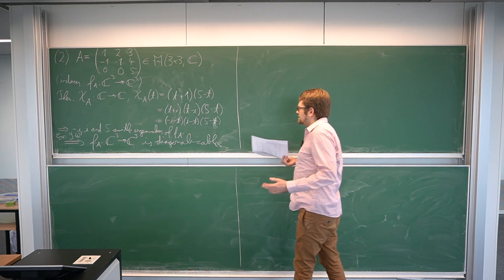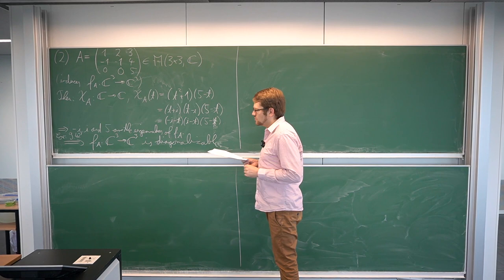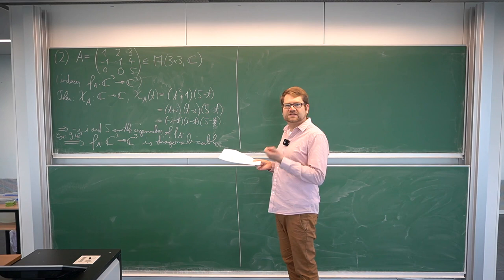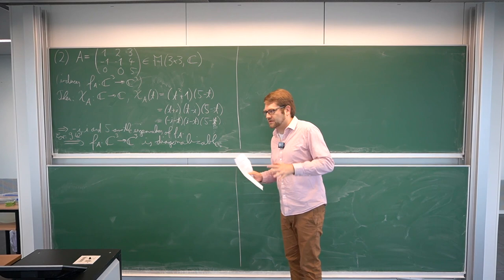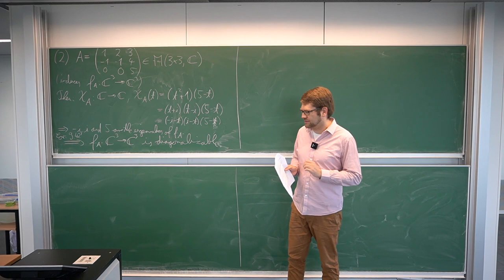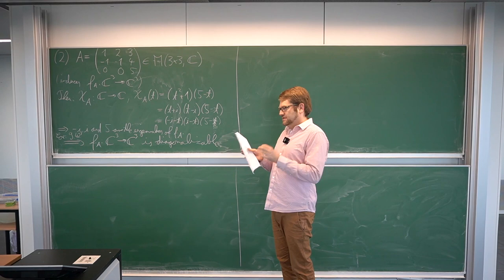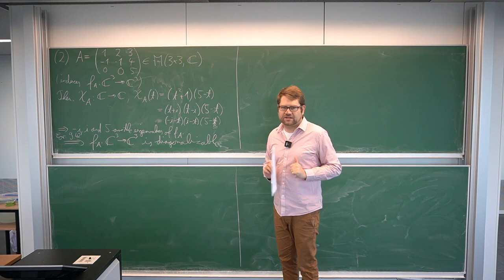We've seen that we can read eigenvalues from these polynomials, and that if an endomorphism is diagonalizable, the characteristic polynomial takes a particular form. But we also want to discuss the converse. We've seen from a counterexample that it's not enough to demand that the characteristic polynomial is a product of linear polynomials — this does not suffice to get diagonalizability. But we want to show that if we have this decomposition into linear factors and another condition we will introduce, then we get diagonalizability.